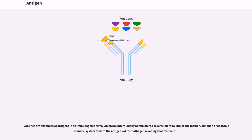Vaccines are examples of antigens in an immunogenic form, which are intentionally administered to a recipient to induce the memory function of adaptive immune system toward the antigens of the pathogen invading that recipient.